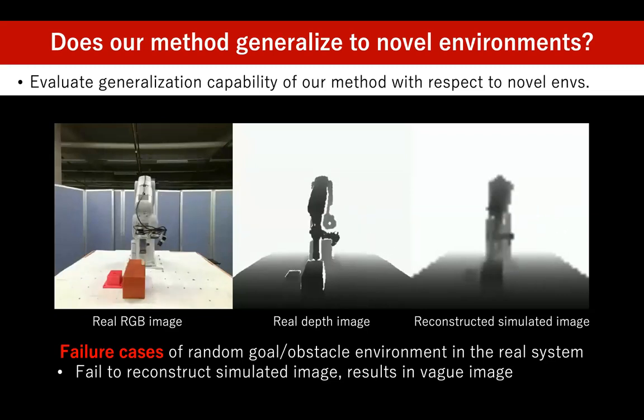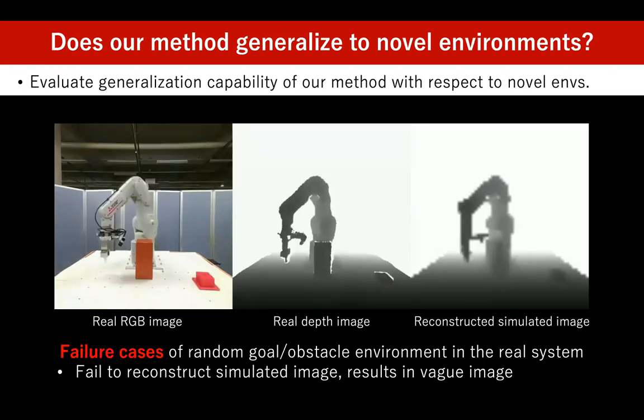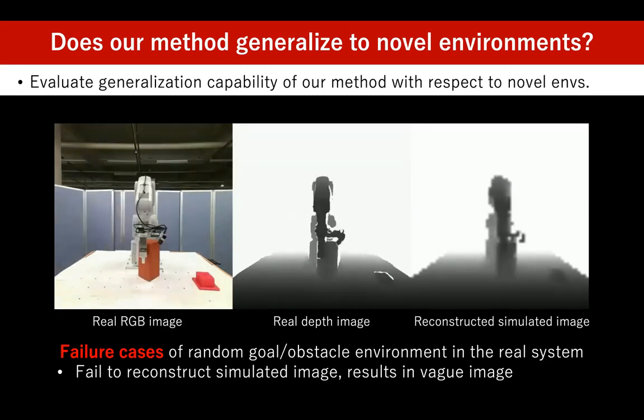Some failure cases occur when reconstructed simulated images are not similar to true simulated images. For example, in one case the goal box next to the obstacle in the reconstructed simulated image is too vague for the waypoints generator to identify the goal location. In another similar case, the real-to-sim transfer model fails to reconstruct an obstacle in front of the robot, causing a collision.